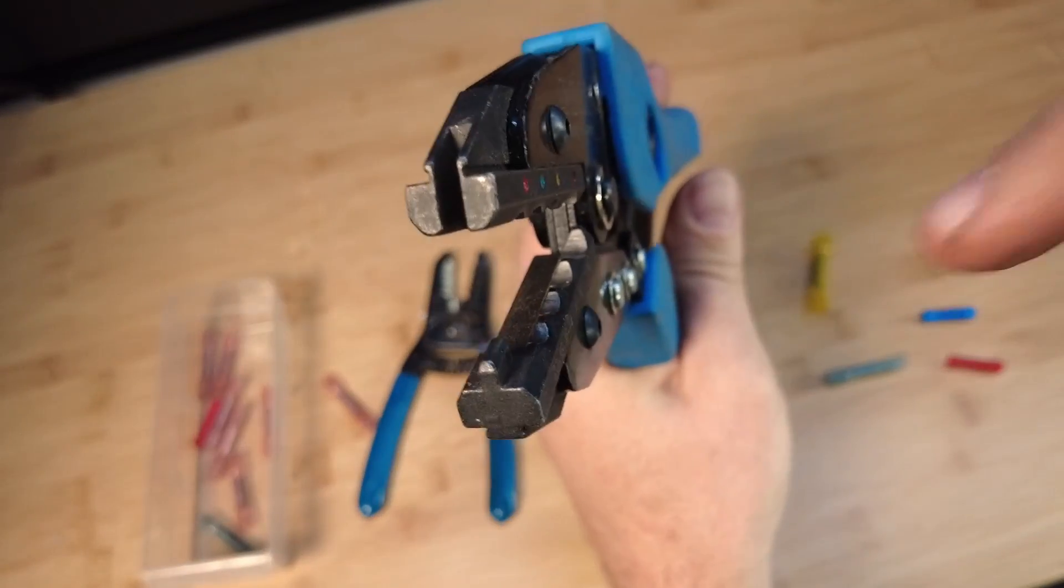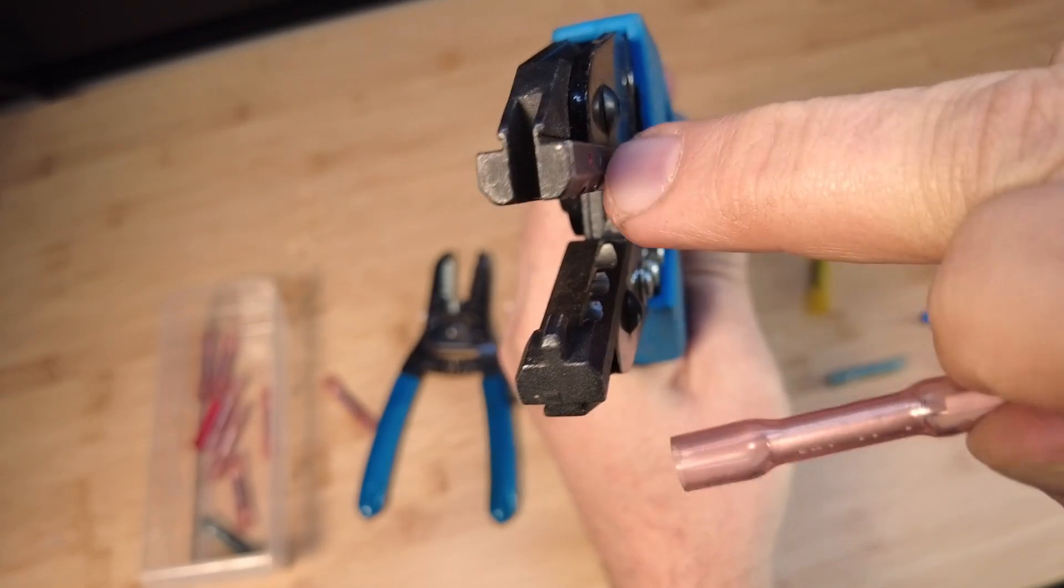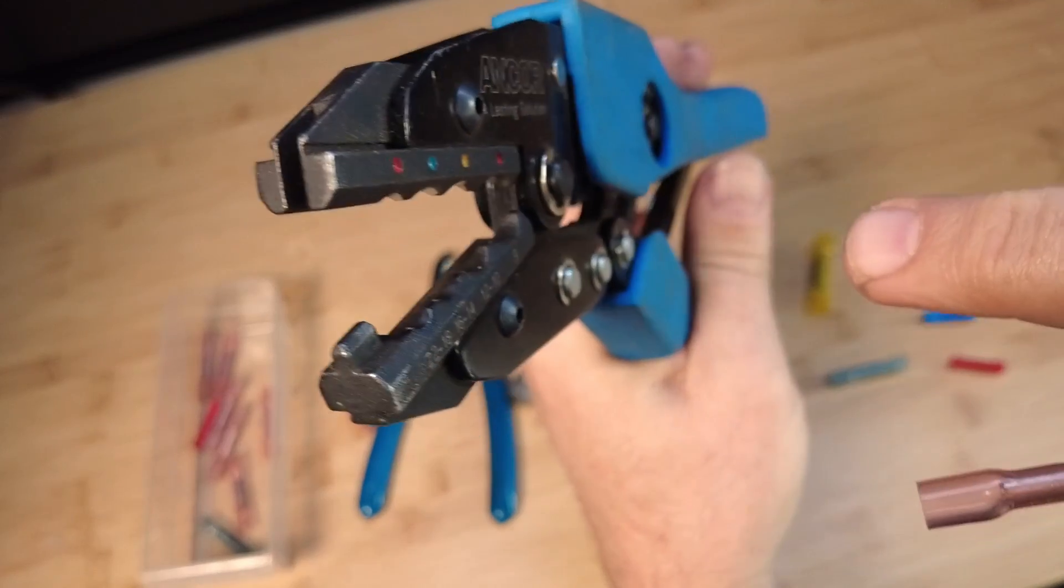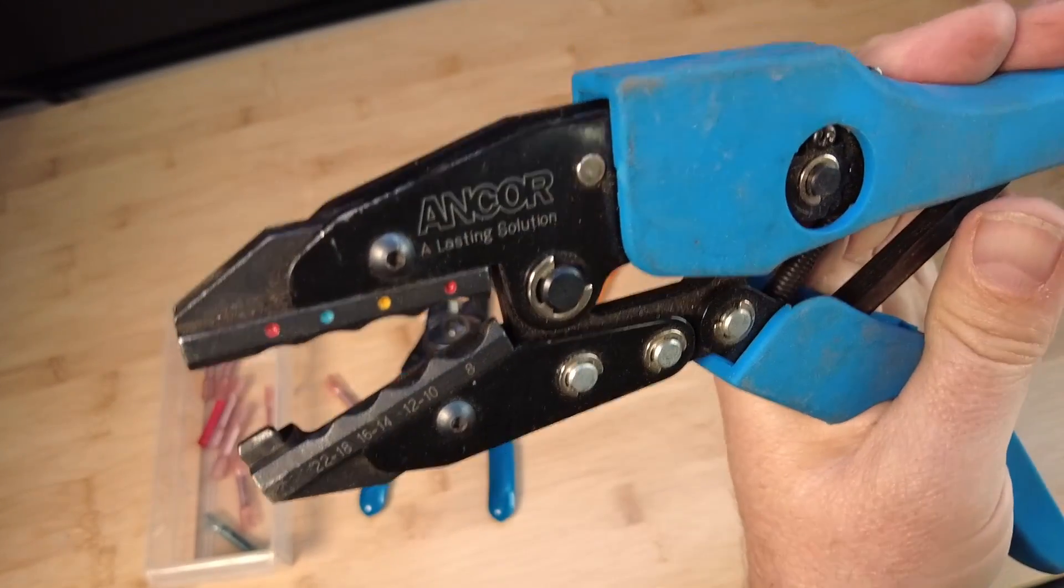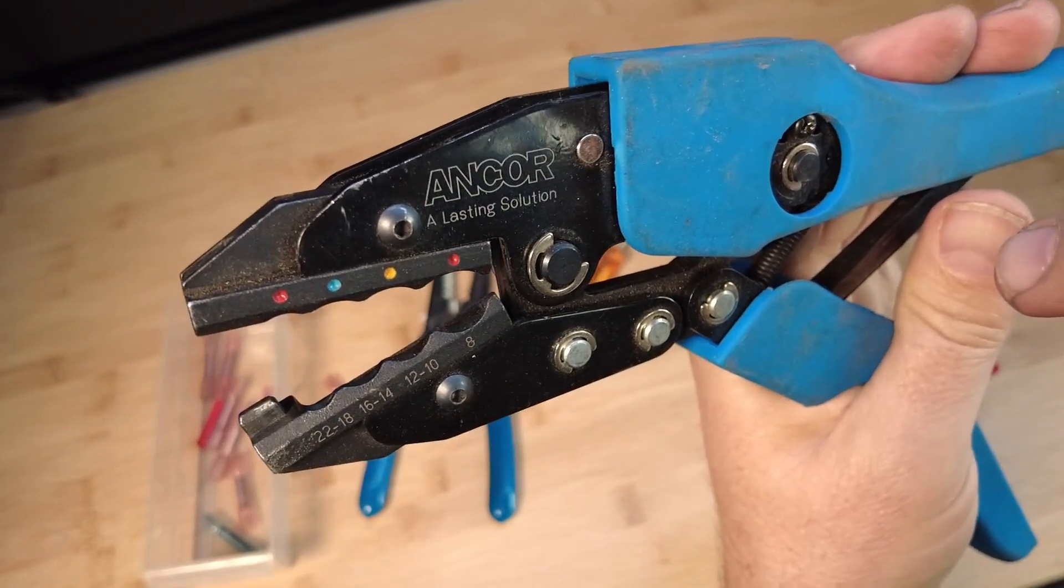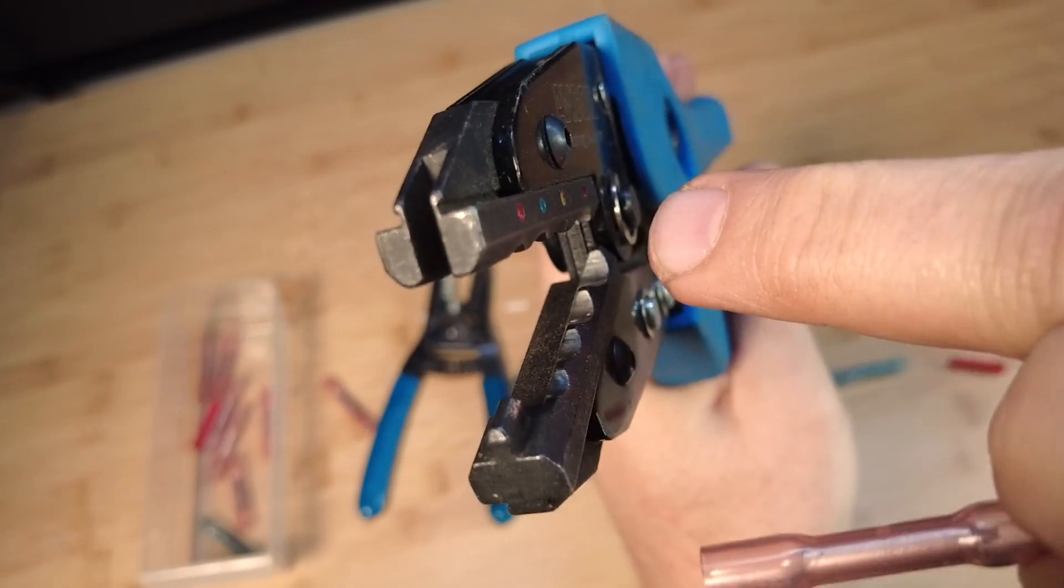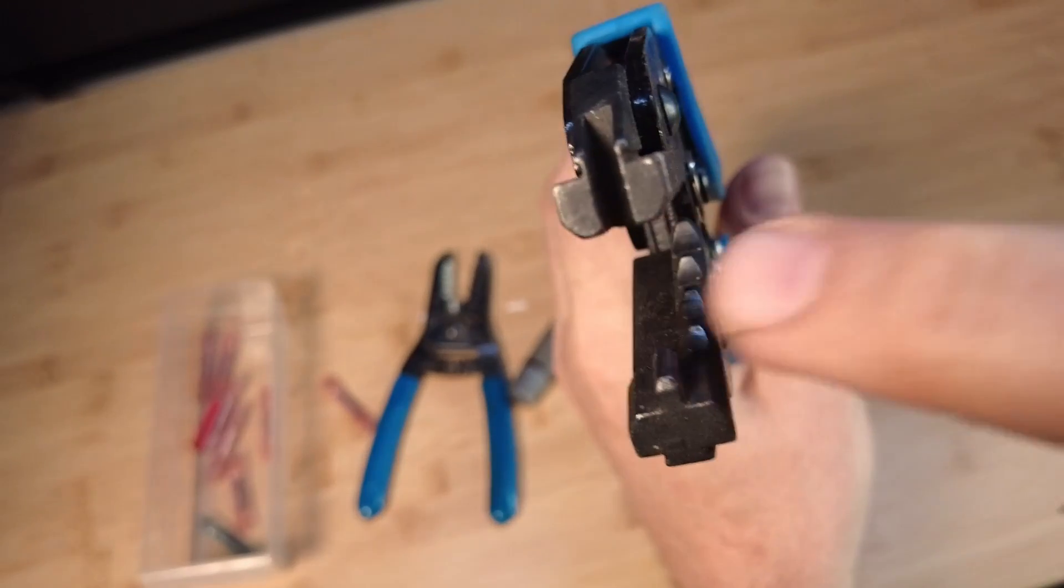And be aware if you use this, the jaws are actually offset to one side. You can get these in single or double crimp models. And there are different, but we're using an Angkor product here, an Angkor crimper. There are different brands of crimpers, of course, and then there are single and double crimp.